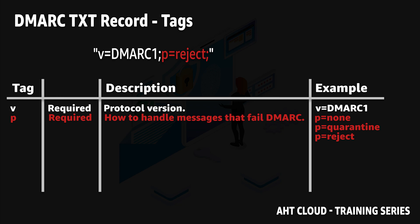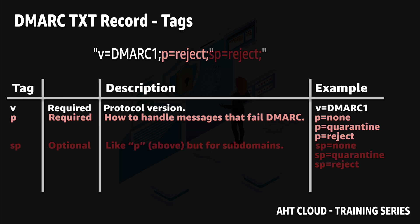The sp tag is an optional tag, similar to the p tag. It allows you to specify your policy for subdomains on your domain name. If you don't include this, then the value inside your p tag will be used.